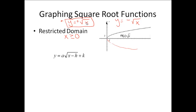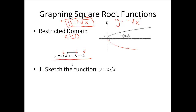When we are doing square root functions, they're going to take on the form y equals a times the square root of the quantity x minus h, plus k. This should look very familiar from when we do quadratics. a is still dealing with the steepness, h is our horizontal movement, and k is our vertical movement.